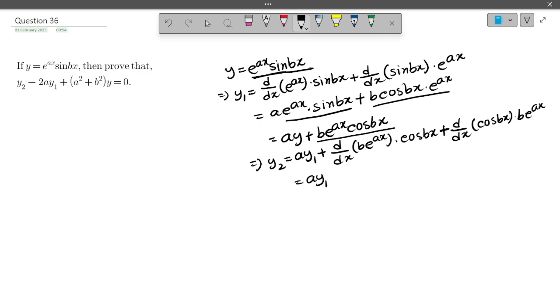It will be ay₁ plus ab e to the power ax cos bx minus, derivative of cos bx will be minus b sin bx into b e to the power ax. So it will be ay₁ plus, we will write it as ab e to the power ax into cos bx and we will write it as b² e to the power ax sin bx.